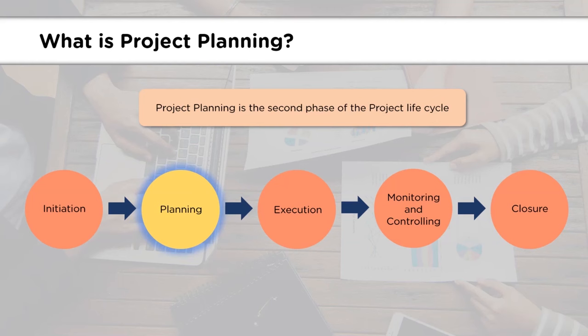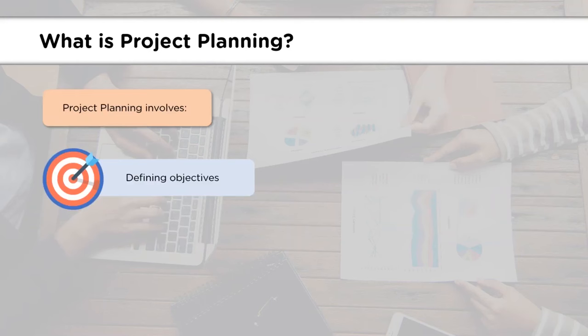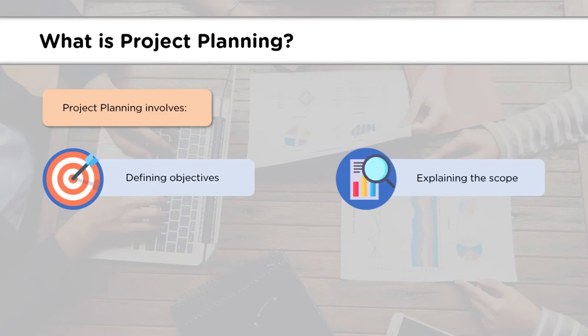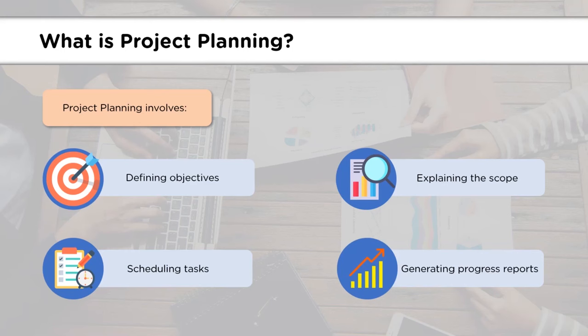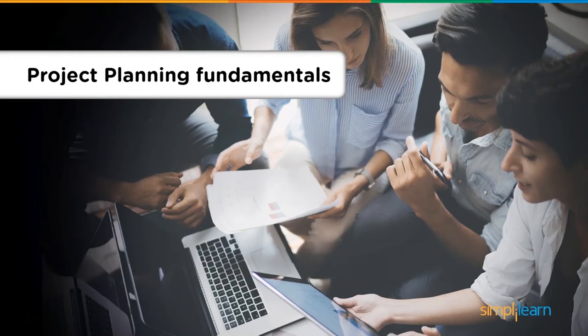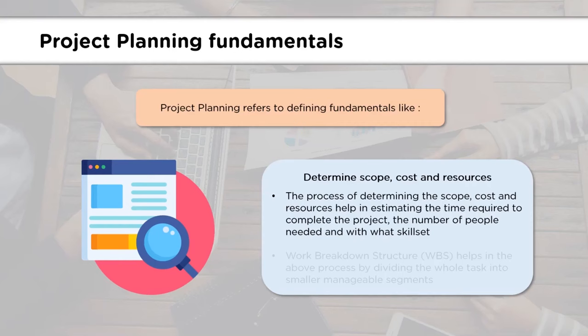Project planning includes: describing the objectives or outputs expected from the project; elaborating the scope to clarify what the project is about; forming a schedule with start and end dates for different tasks so the project finishes within the scheduled time; and making and generating progress reports that document all that went on during the project, helping to evaluate and improve future projects.